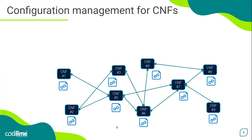Well, two completely different approaches can be applied here. The first approach assumes that each CNF is started up with sufficient configuration to efficiently handle network traffic related to the network topology state at the time. This configuration is never updated for this particular CNF instance. When there is a new network flow to handle or a new service function chain is created that the CNF is part of, the current instance is terminated and another is launched with an updated configuration.